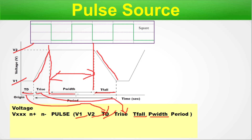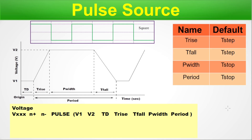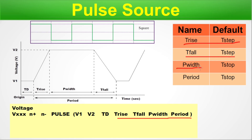You can easily visualize the period from the figure. Regarding default values: if nothing is specified, T rise will default to T step, T fall will default to T step, pulse width will default to T stop, and period will also default to T stop. These are for transient simulation, so there will be a simulation step. You should specify these values explicitly when needed.